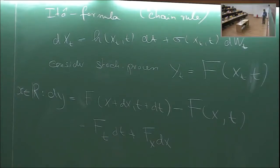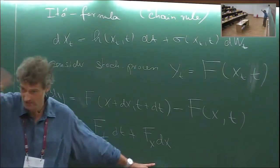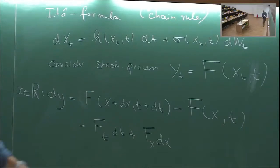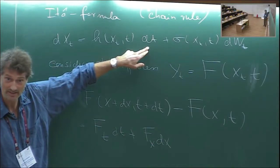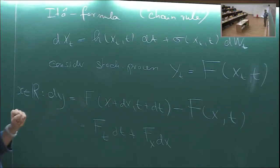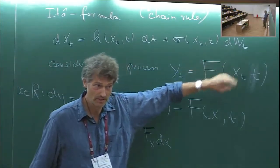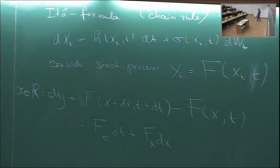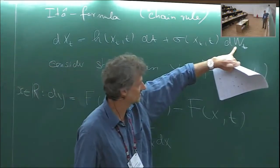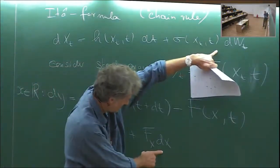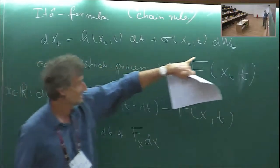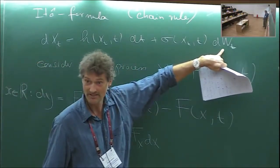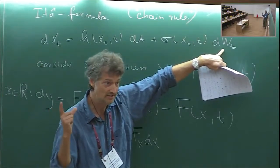dW is the noise term, and at the next order we would get a dX². A dX² gives a dW², which is order dt — so we have to take the next order. This would be plus one-half, two derivatives with respect to x, times dX². Because if we square dX we get: an order dt² — that's too small; a dt·dW term — that's order 3/2, too high; but we get the dW² term, which is a dt.